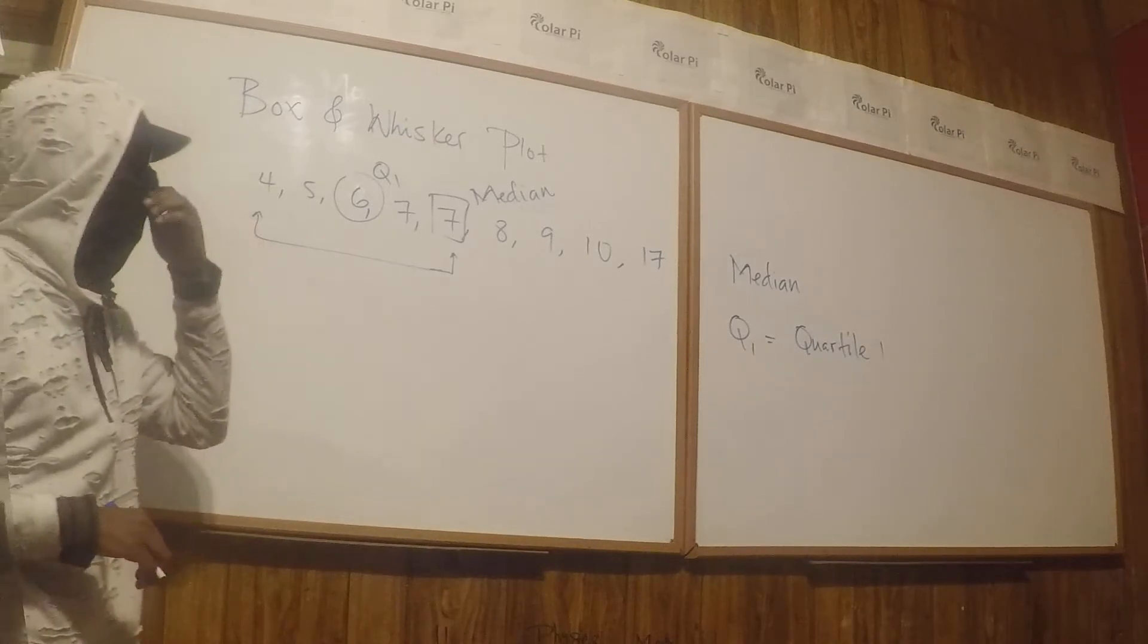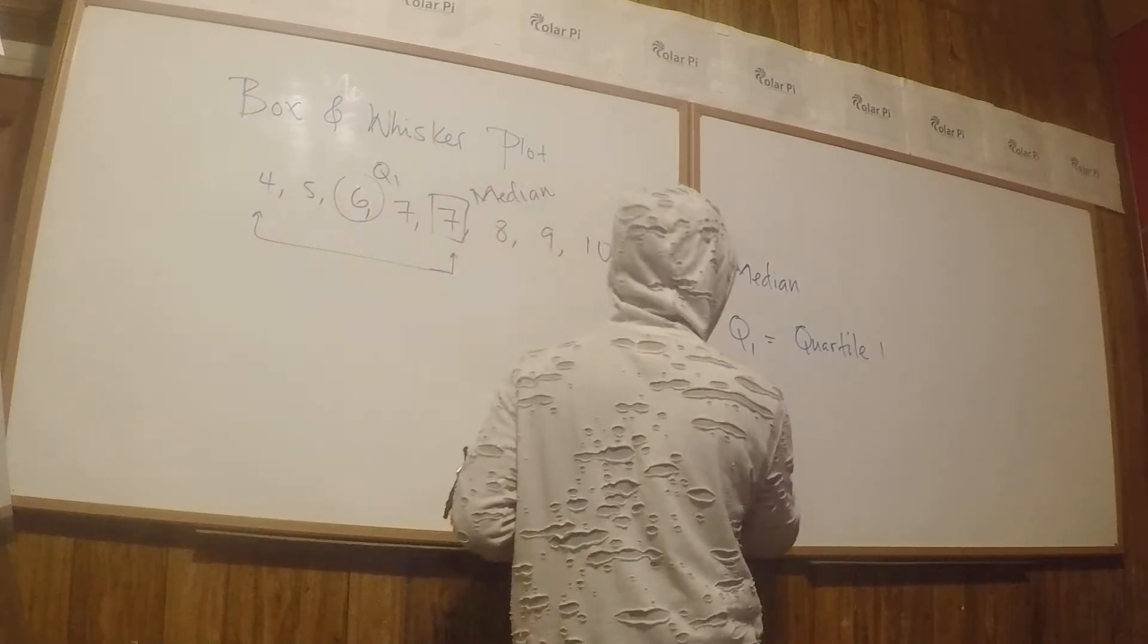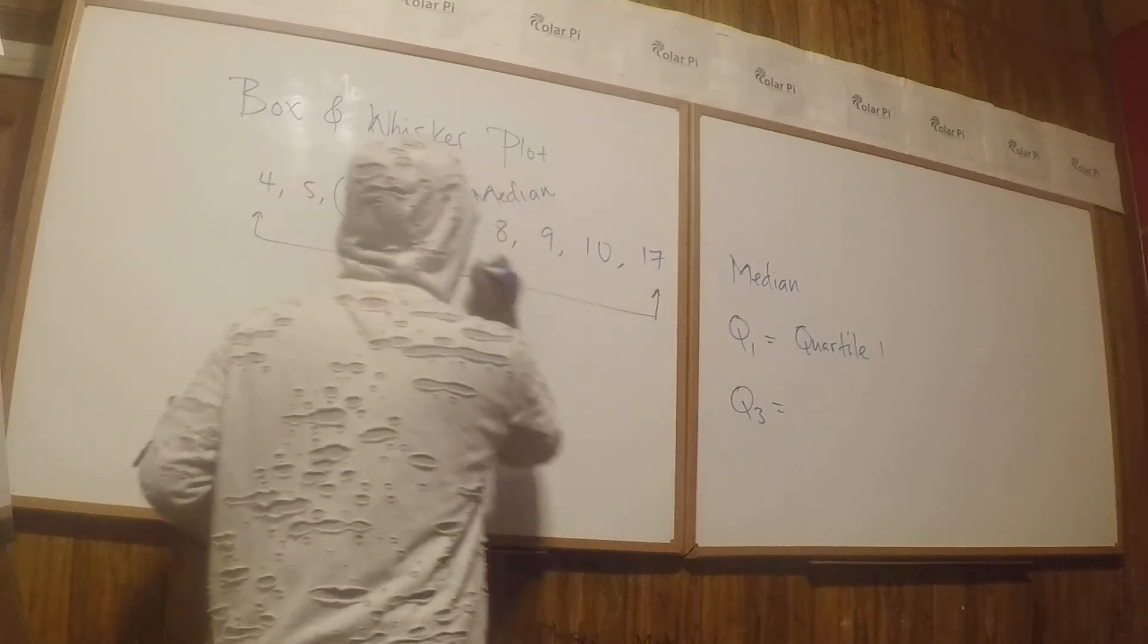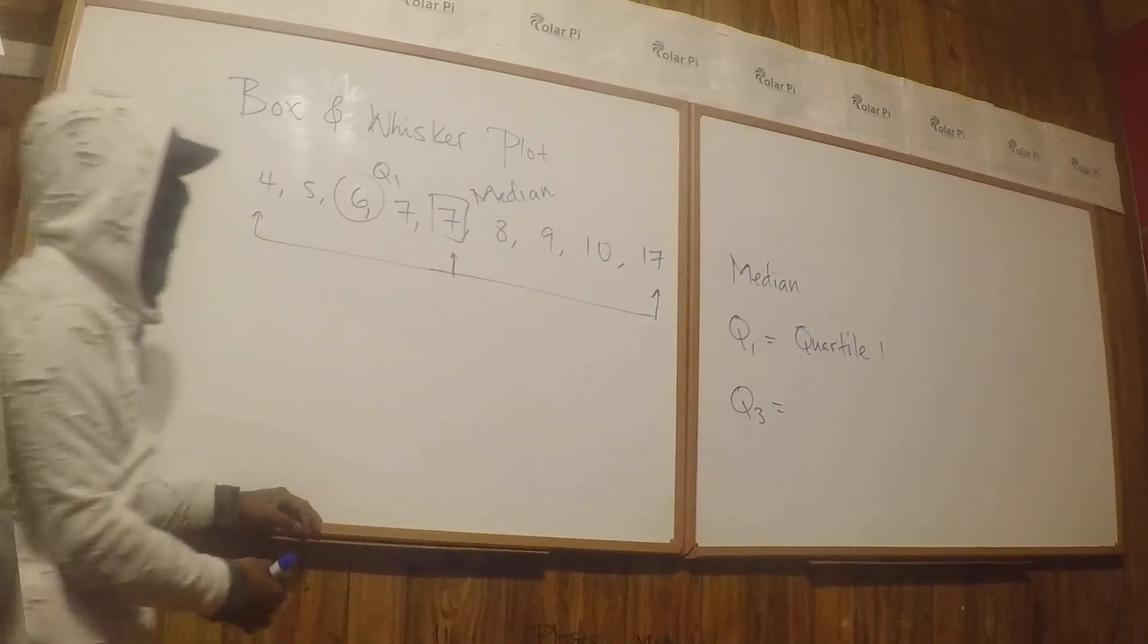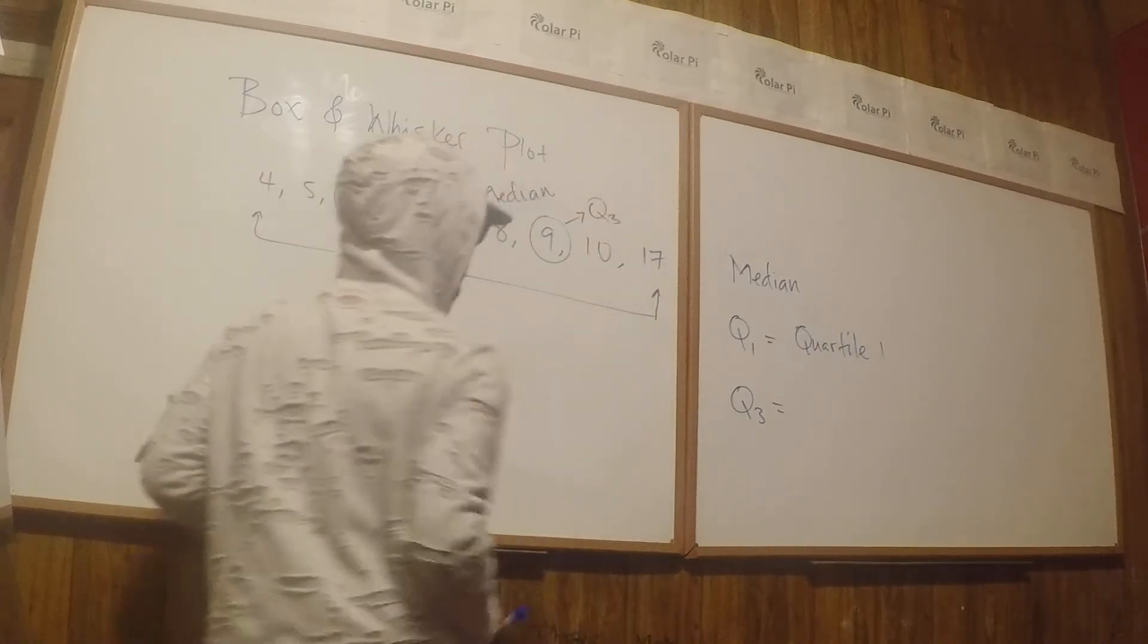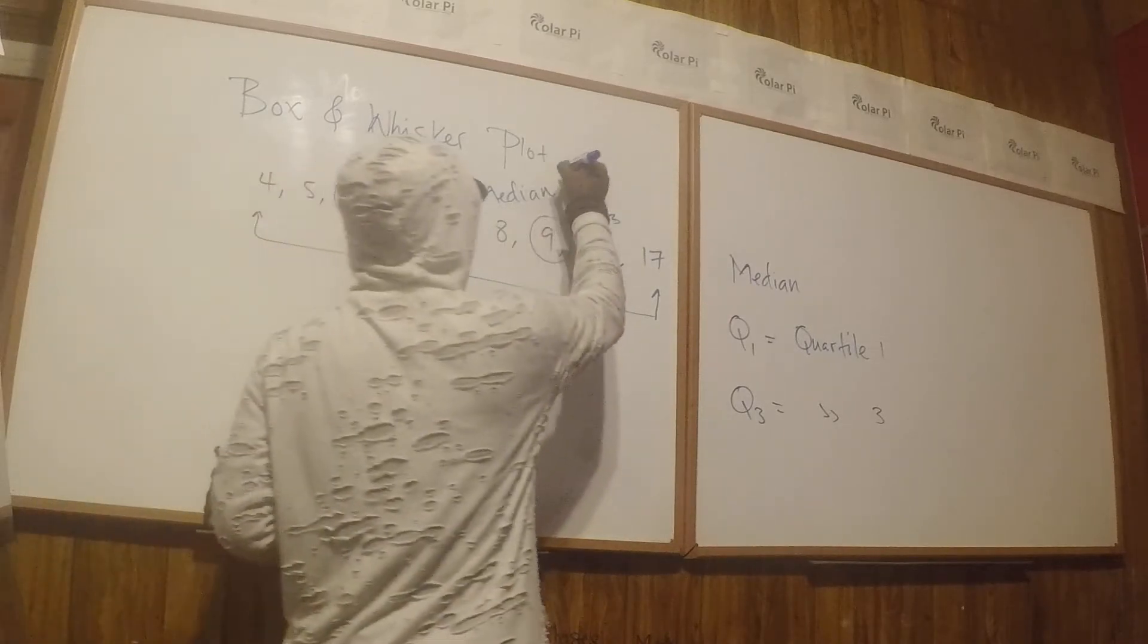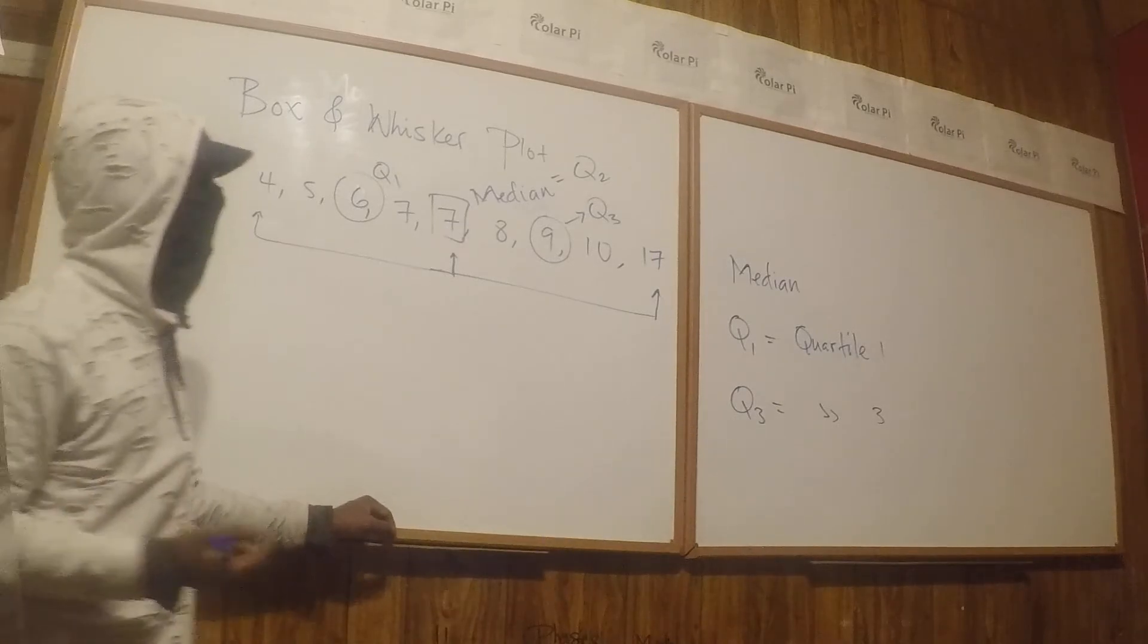So Q1 is 6 now. And as you can imagine, Q3—Q3 is the median of the right half. Again, we use the main median in our calculation of Q3 if we have an odd number of data points. This is Q3, so Q3, quartile 3, in our case is 9. So technically the median is Q2.